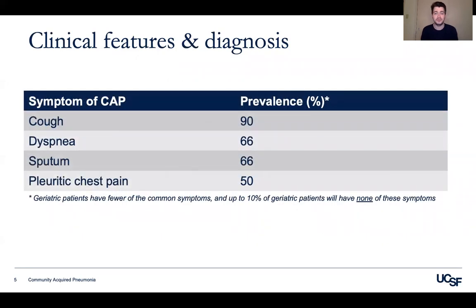The symptoms of CAP are important to know, as are their prevalences. Cough is present in 90% of cases of CAP, followed by dyspnea and sputum production, and then pleuritic chest pain. A major caveat is that geriatric patients have fewer of the common symptoms of CAP, so your clinical index of suspicion needs to be very high for CAP in older patients.